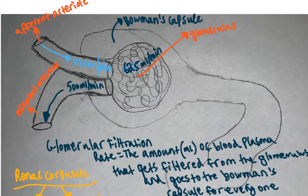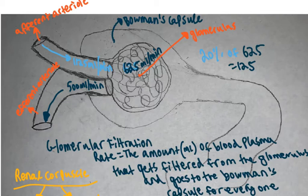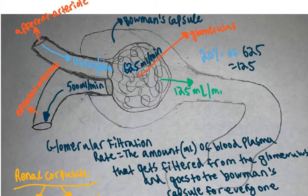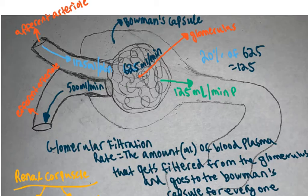It turns out that only around 20 percent of the blood that enters the glomerulus goes to the Bowman's capsule. Twenty percent of 625 mL/min is 125, so the glomerular filtration rate is around 125 milliliters per minute of blood plasma. This blood plasma contains all the nutrients coming from the afferent arteriole.